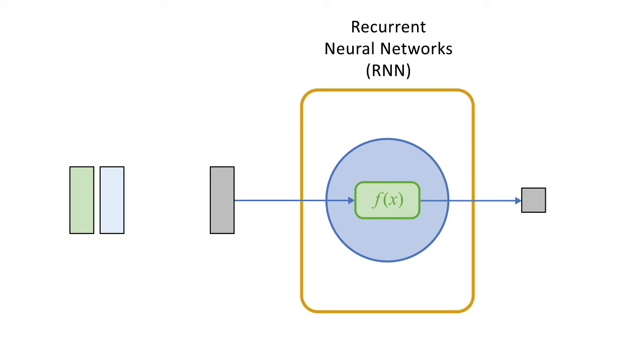In a recurrent network, this output is then used along with the next element as the inputs for the next step. And so on.